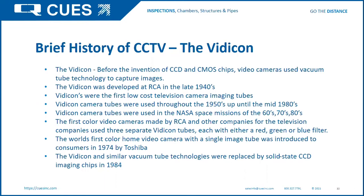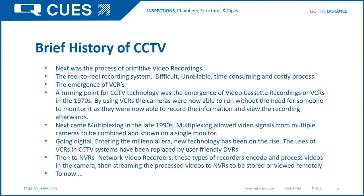Next came the process of recording — the primitive reel-to-reel recording system, which was difficult, unreliable, time-consuming, and costly. Then came the emergence of VCRs. The turning point for CCTV technology was the emergence of video cassette recordings in the seventies — now we were able to record information and view it afterwards without someone constantly monitoring. Through my travels, I still run into several municipalities that still have those old camera systems using VCR tapes, with shelves full of tapes in the back office, probably covered with dust.